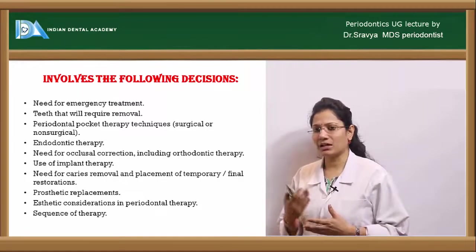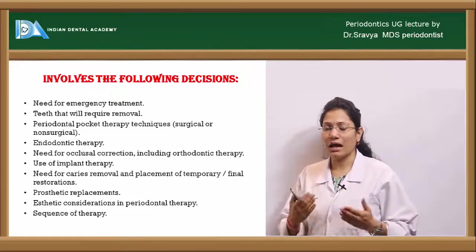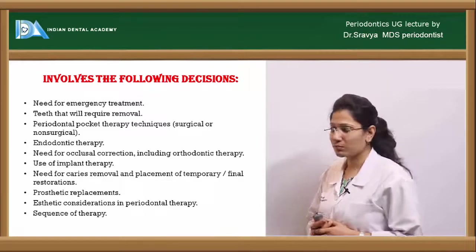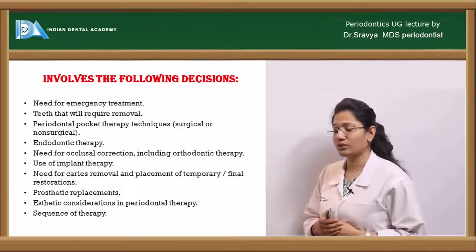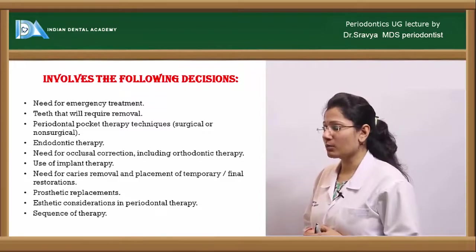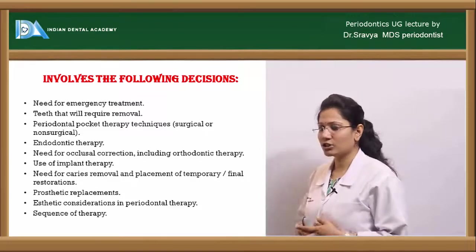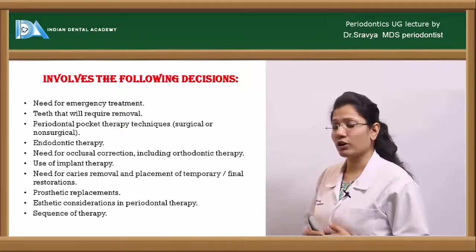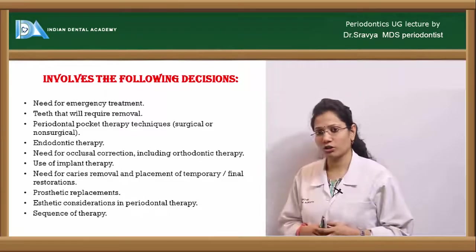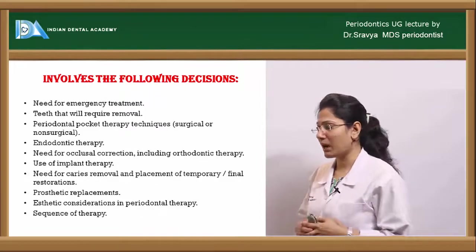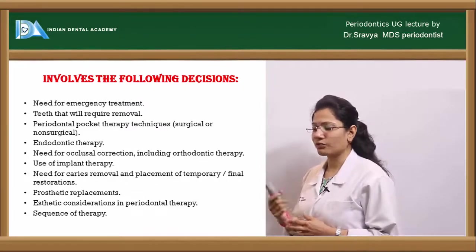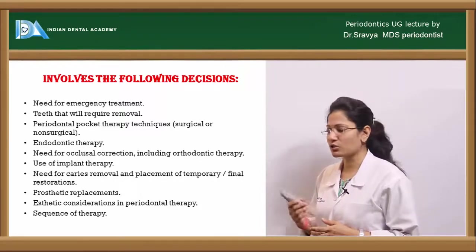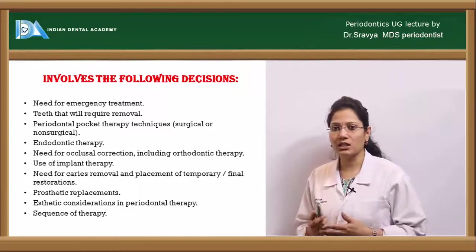Your treatment plan involves the following decisions: need for emergency treatment, teeth that will require removal, periodontal pocket therapy techniques (either surgical, non-surgical, or regenerative), endodontic therapy, need for occlusal correction including orthodontic therapy, implant therapy, caries removal, placement of temporary or final restorations, prosthetic replacements, aesthetic considerations in periodontal therapy, and the sequence of therapy.